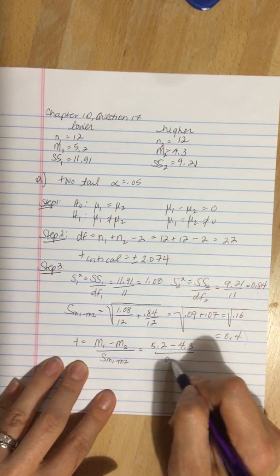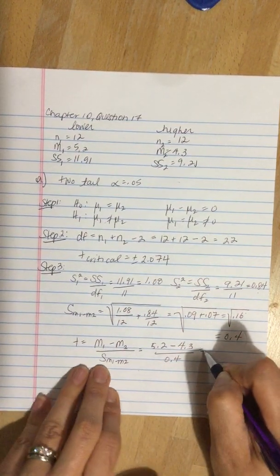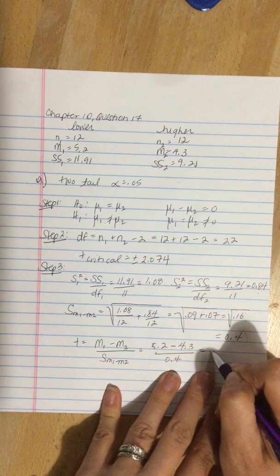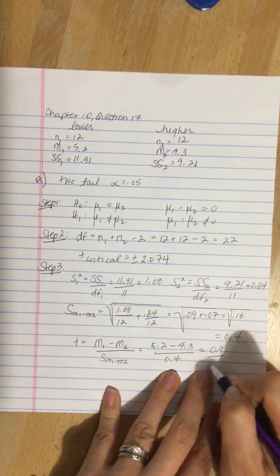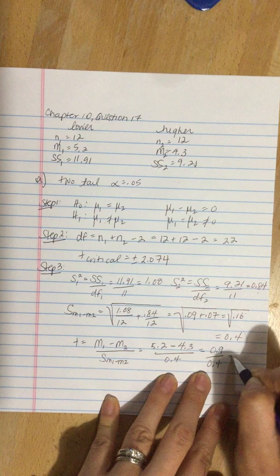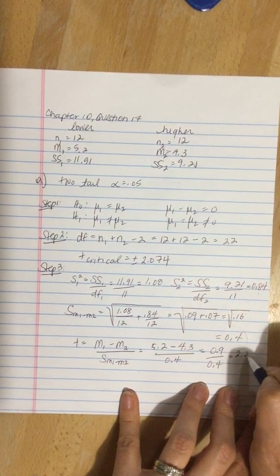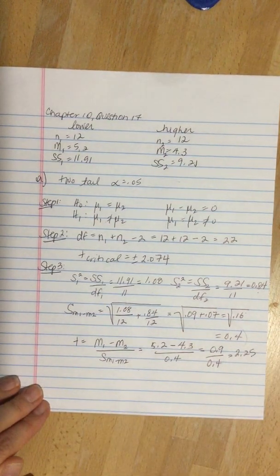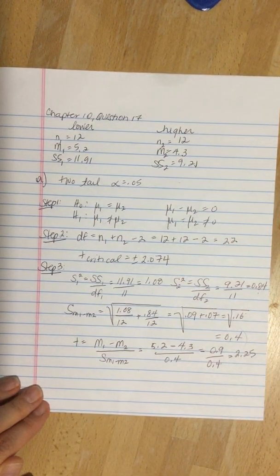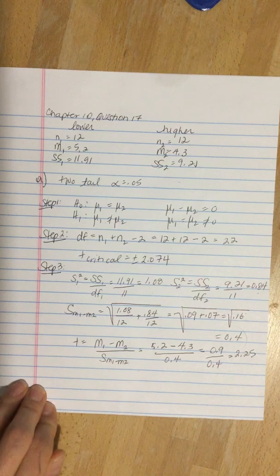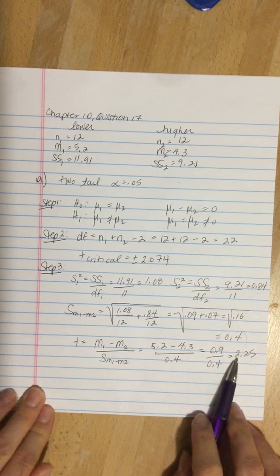I'm going to take that—so that's 0.9 divided by 0.4, which is 2.25. So that's step 3.